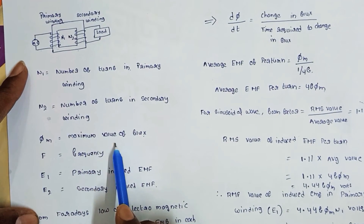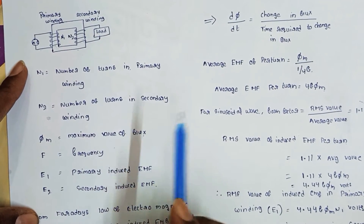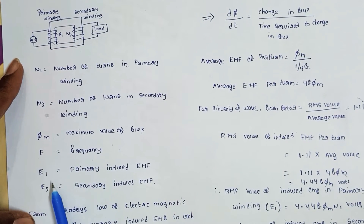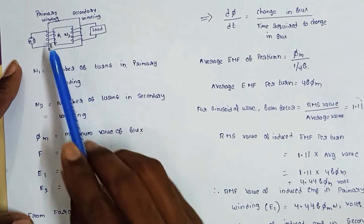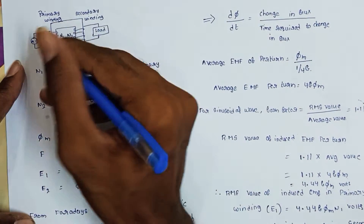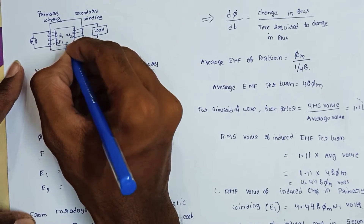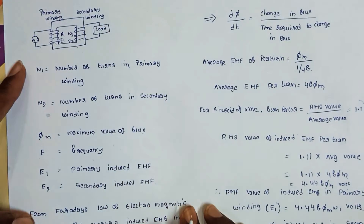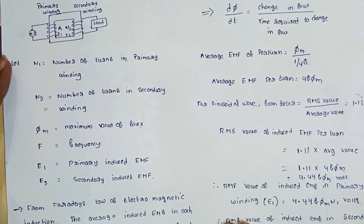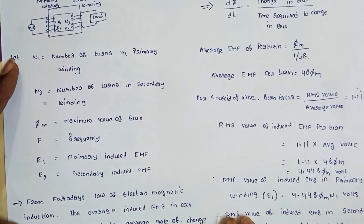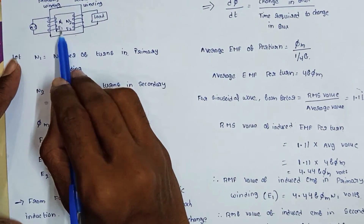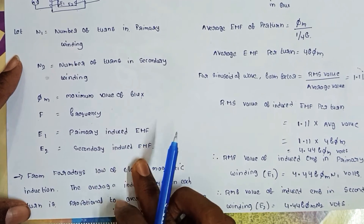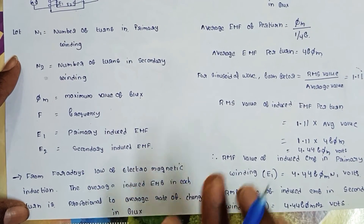φM is the maximum value of the flux. F equals frequency, and E1 equals the primary induced EMF. Here we can see induced EMF E1 and induced EMF E2. The mutually induced EMF is E2, and this is the self-induced EMF. So E2 is the secondary induced EMF.